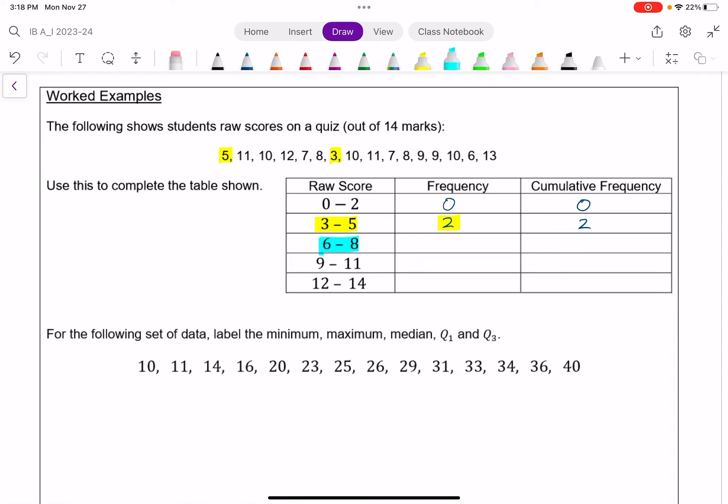So there's 2 students who had a score between 3 and 5. The frequency of that interval is 2. The cumulative frequency is 2 plus the 0 before, which is still just 2. Next, between 6 and 8, I should have 5. I got a 7 and 8, a 7 and 8, and a 6. So there's 5 students who had that score. The cumulative frequency is that as well as anything before, so it's 5 plus that 2, so a cumulative frequency of 7.